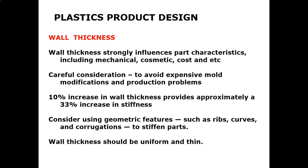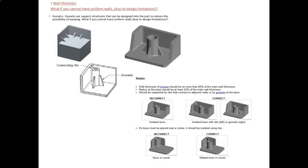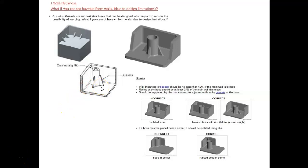Wall thickness should be uniform and thin. If you cannot have uniform wall thickness due to design limitations, you can use a gusset — a support structure that can be designed into the part to reduce the possibility of warping. A gusset is also a term used in packaging of material, such as the folded sides of food packaging.